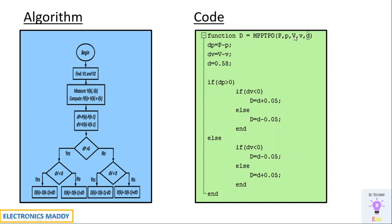In the code, capital P and capital V stand for instantaneous values, while small p and small v represent previous values. We compute dP = P - p and dV = V - v. Note that the product V×I is determined externally in the MATLAB model using a product block in Simulink — it is not included inside this function.